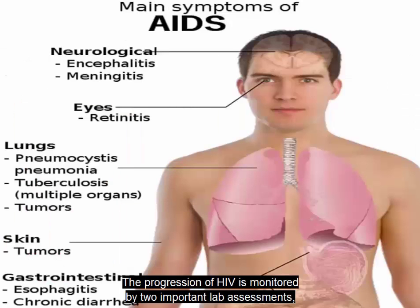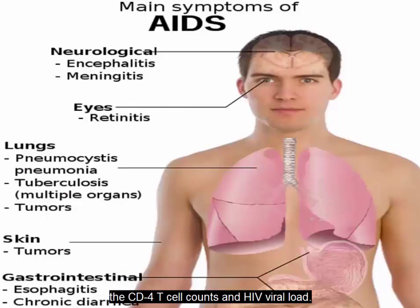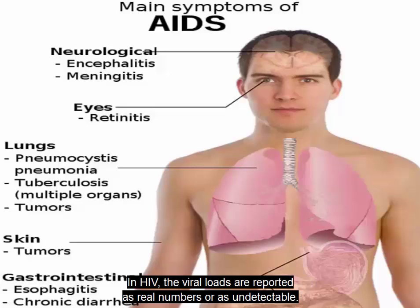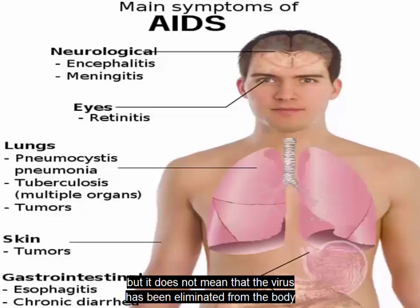The progression of HIV is monitored by two important lab assessments: the CD4 T-cell counts and HIV viral load. Remember, the CD4 T-cell normal range is 800 to 1200. In HIV, the viral loads are reported as real numbers or as undetectable. Undetectable indicates the viral load is lower than the test is able to report, but it does not mean that the virus has been eliminated from the body or that the individual can no longer transmit HIV to others.